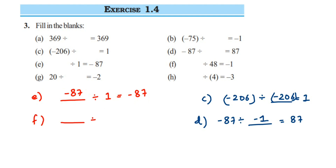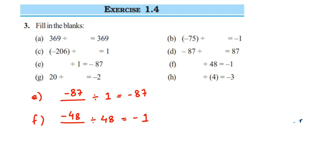Problem f: 48 divided by what gives -1. We know dividing a number by itself gives 1, but since there is a negative sign in the answer, it will be -48.